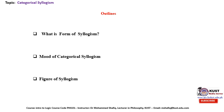The outline of today's lecture consists of three parts. First, we are going to discuss in detail what is meant by the form of syllogism. Then we will proceed through the mood of categorical syllogism. And finally, we will discuss what is the figure of syllogism.